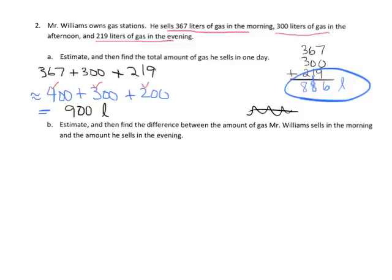Question B says estimate and then find the difference between the amount of gas Mr. Williams sells in the morning and the amount he sells in the evening. So we're gonna subtract: 367 liters minus 219 liters. I'm gonna estimate to the nearest hundred, so that's 400 liters minus 200 liters, so our estimation is about 200 liters.